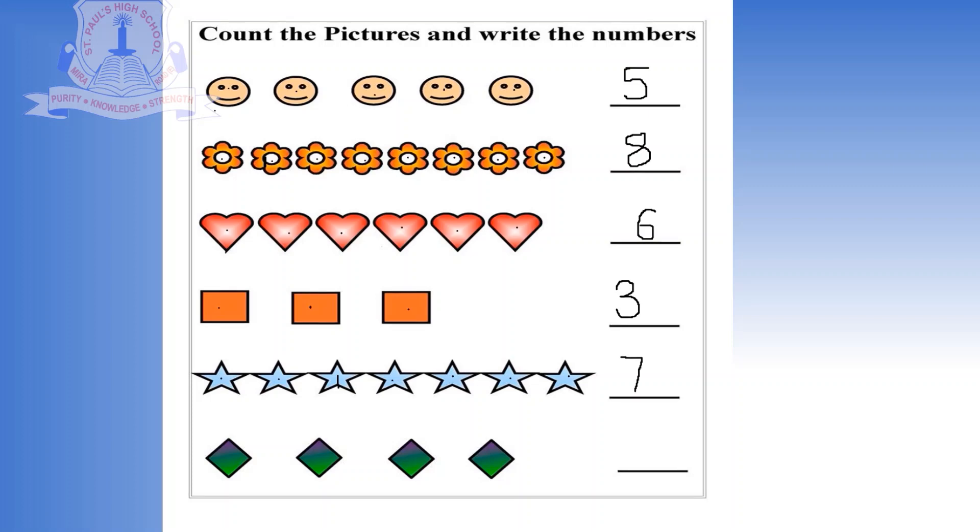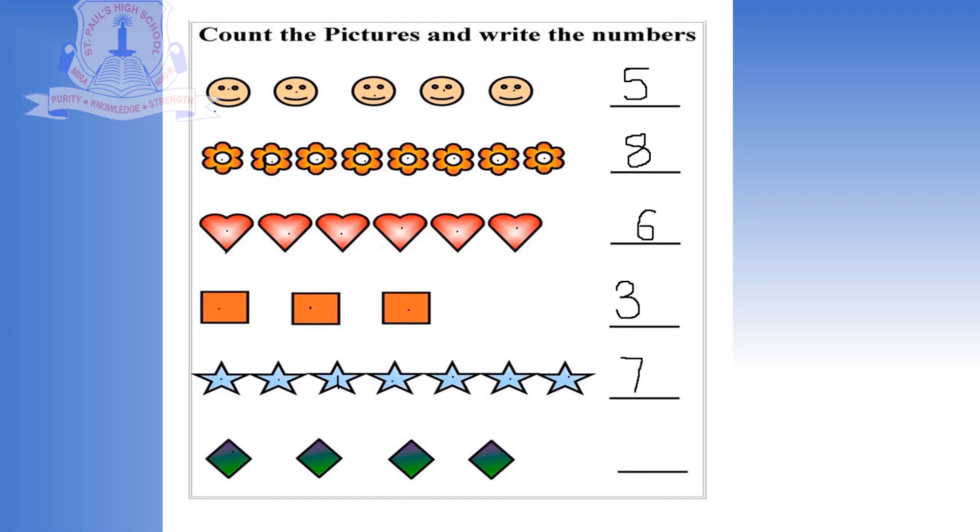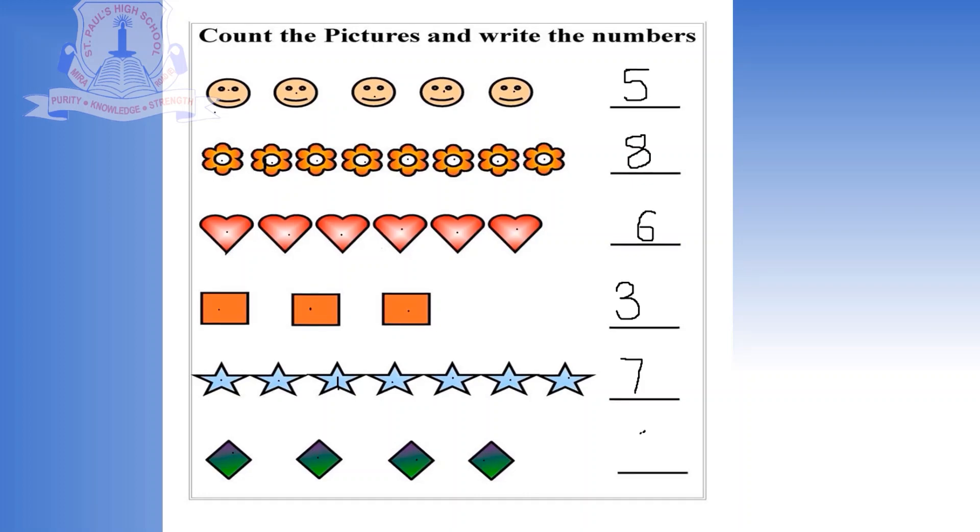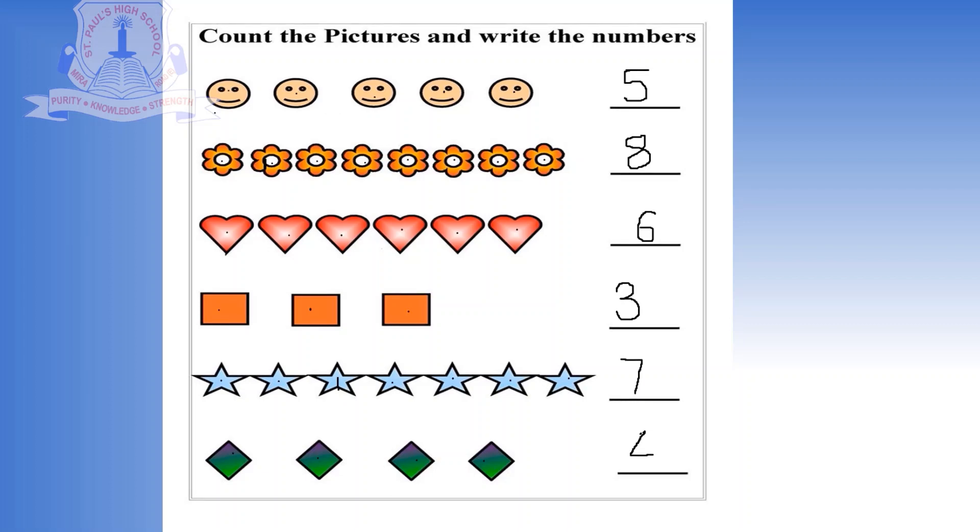And the last object is diamond. 1, 2, 3, 4. So how many diamonds are here? Number 4. Very good.